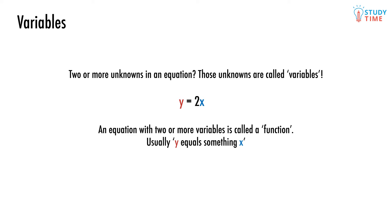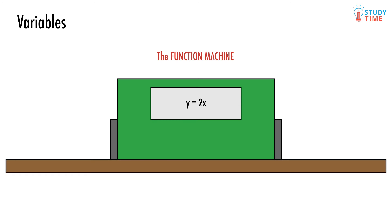This type of equation with two or more variables is called a function. You can think of it as a machine. We get to choose a value for x.